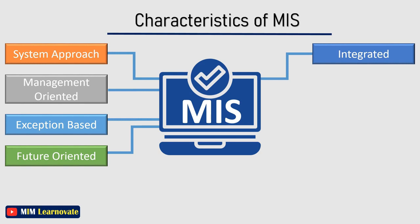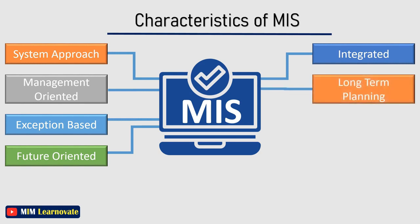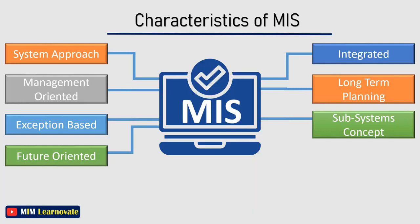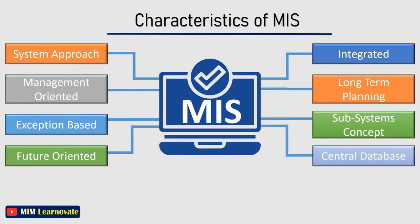For example, in order to develop an effective production scheduling system, it is necessary to balance factors such as setup cost, workforce, overtime rates, production capacity, inventory level, capital requirements, and customer services. MIS should always be developed as a long-term plan because it involves logical planning for organizational success. The analyst should keep future-oriented analysis and the needs of the company in mind. MIS development looks complex as a big system but needs to be broken down into digestible subsystems which are more meaningful at the planning stage.